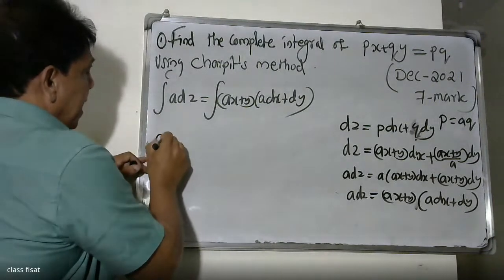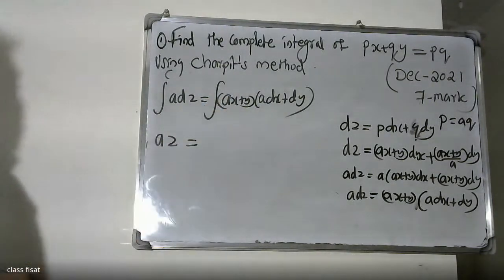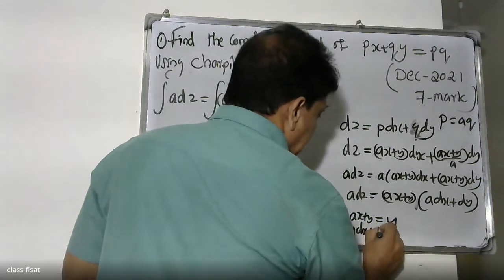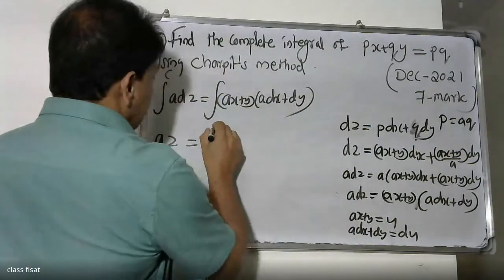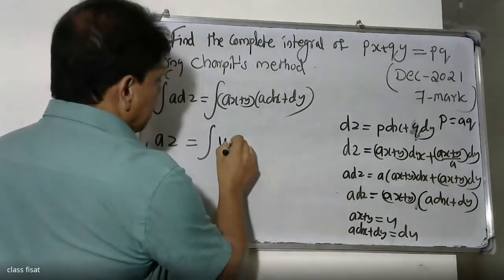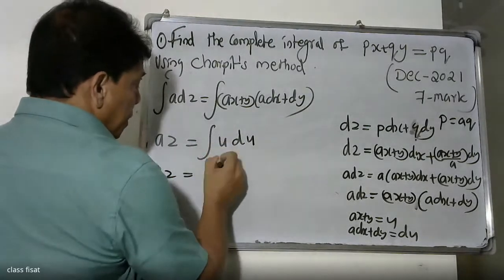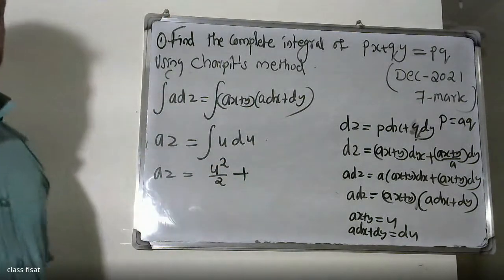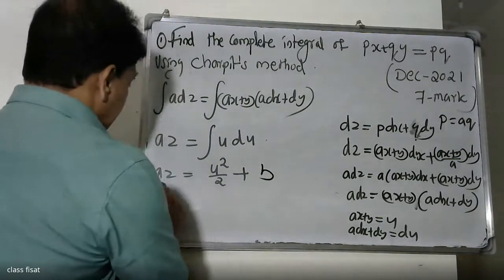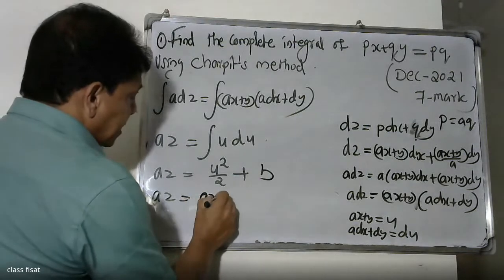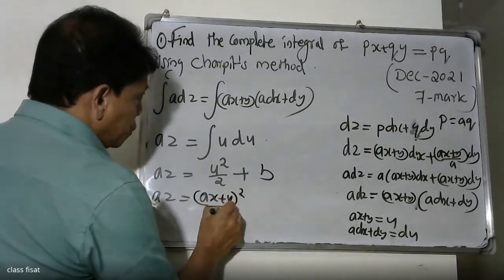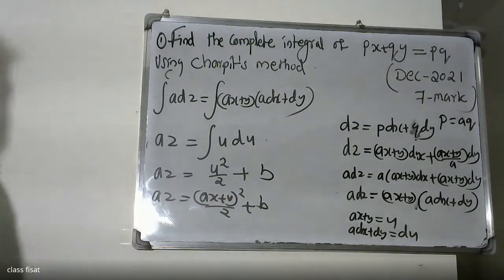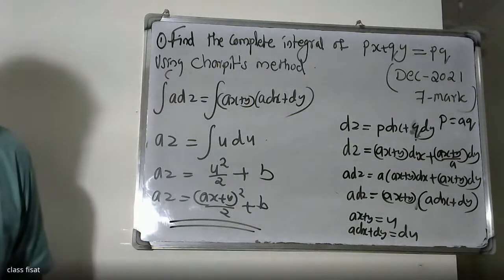Integrating both sides: integral of a dz equals integral of (ax plus y) into (a dx plus dy). Using the substitution method, let u equals ax plus y, so a dx plus dy equals du. The integral becomes integral of u du, which equals u squared by 2. Substituting back: z equals (ax plus y) squared divided by 2 plus constant b.